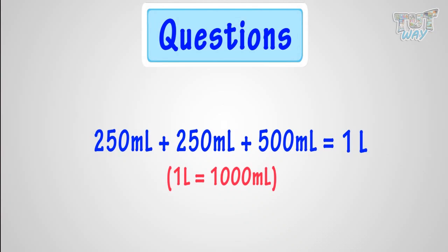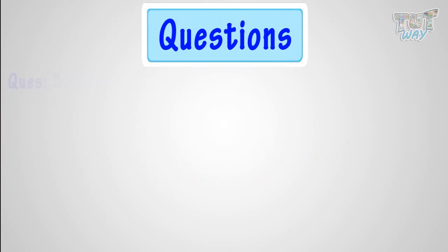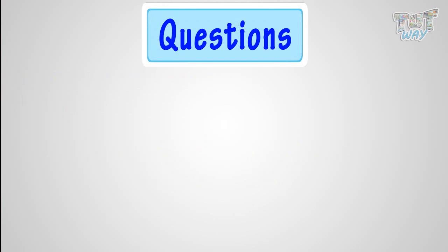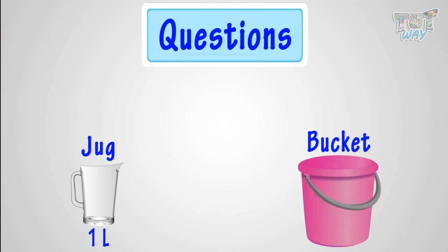Now, 3,000 milliliters is how many liters? It is 3 liters. Good. Here we have a jug whose capacity is 1 liter, and we also have a bucket whose capacity is 4 liters.